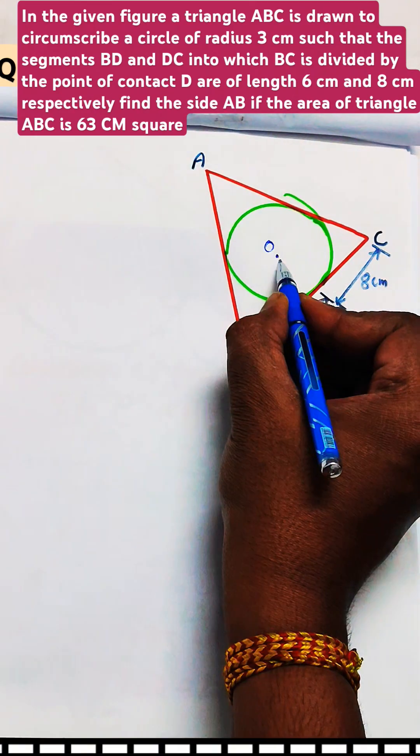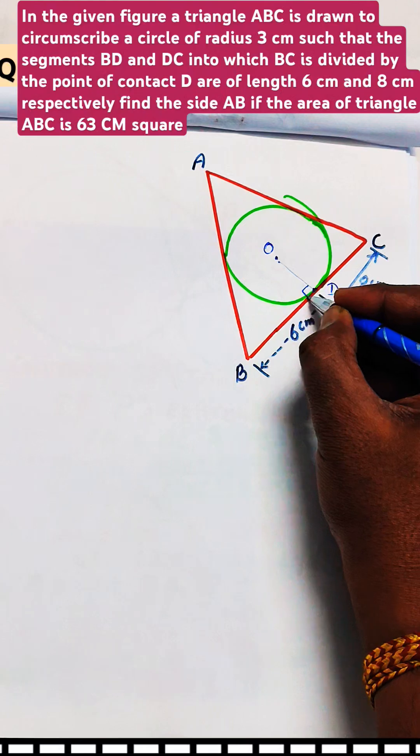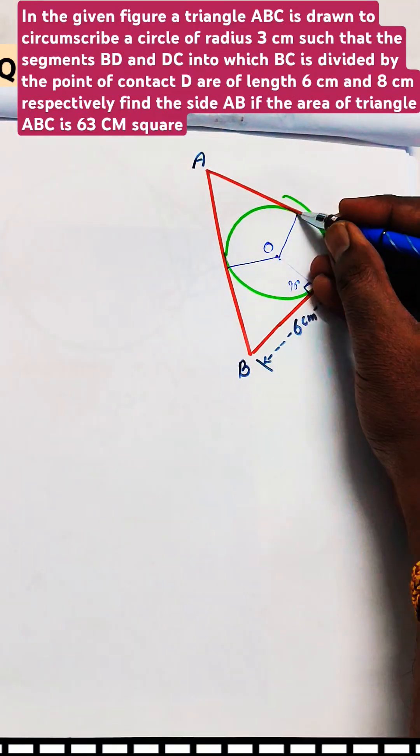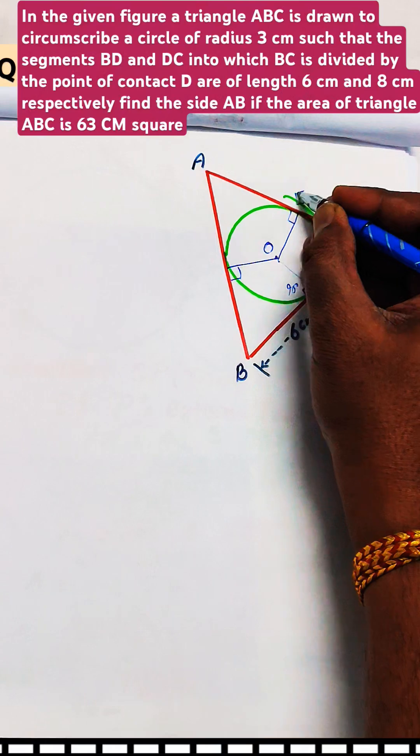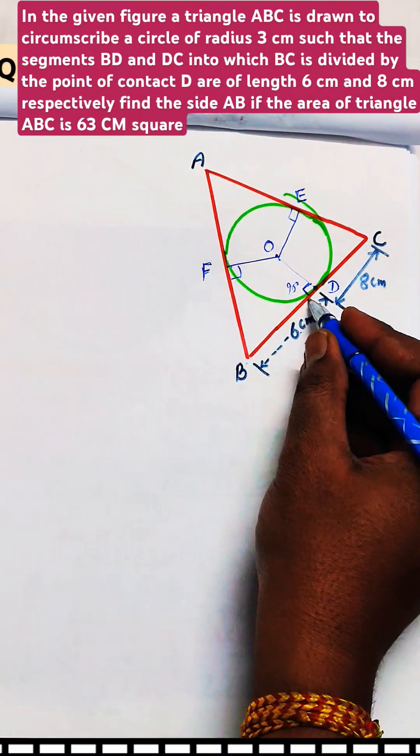In the given question, a triangle is given which circumscribes a circle as shown. The radius of this circle is 3 cm and AB, BC and AC will act as tangents to this radius.